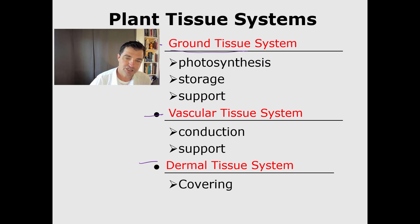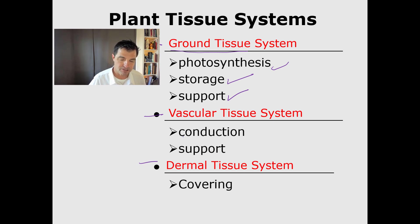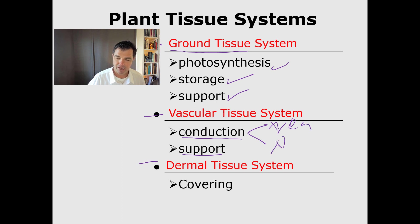Ground tissue systems do things like photosynthesis, but also storage of nutrients and support — helping the plant grow taller and have the structural support for that. Vascular tissue systems are primarily used for conduction, but also for some support. When we talk about vascular tissue and conduction, we'll be talking about xylem and phloem and the ability to transport food and water.